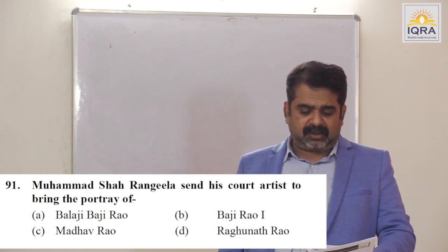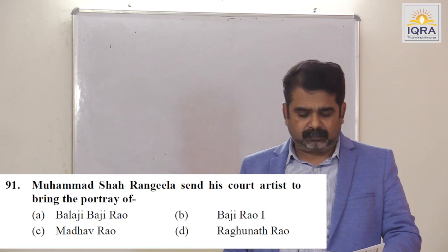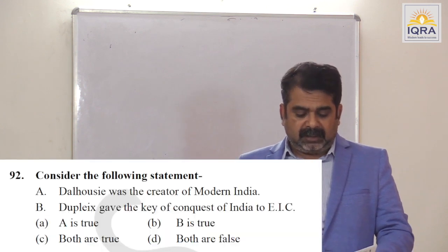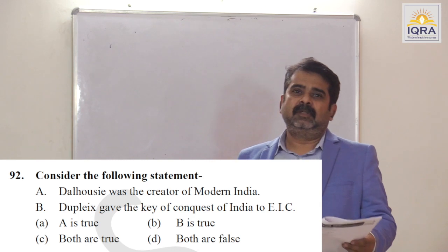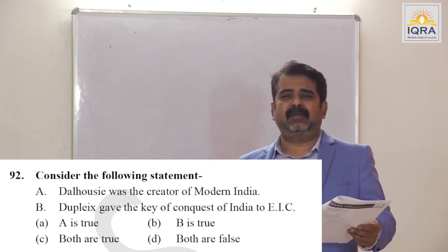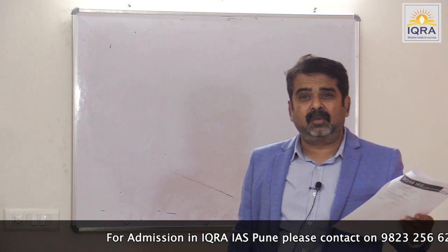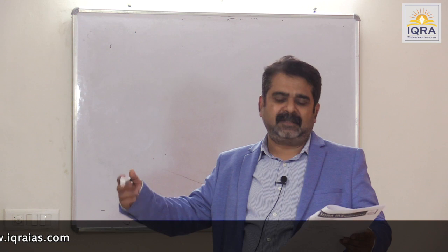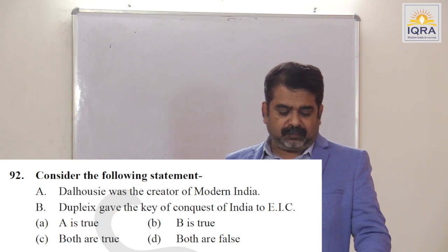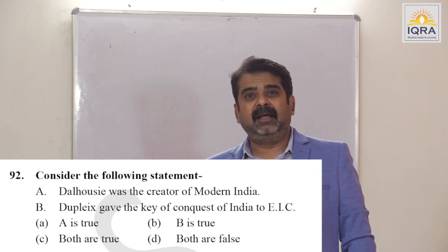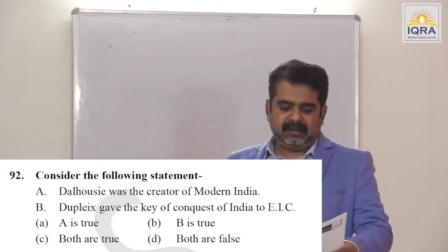Muhammad Shah Rangila sent his court artist to bring the portrait of Bajirao I. Dalhousie was the creator of modern India — true: engines of change — telegraph, railway, postal; end of old ruling structure — what Napoleon did in Europe with monarchies, Dalhousie did in India. Dupleix gave the key of conquest of India to EIC through the policy of king-maker and subsidiary alliance. Answer is C.